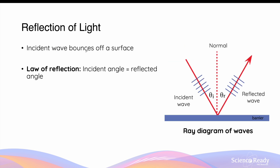In the ray model of light, light is represented as a single line, which demonstrates its direction of propagation. This is useful to highlight the reflection of light. In reflection, the incident light wave or light ray will travel towards the interface between two mediums and bounce off the surface between the two mediums.